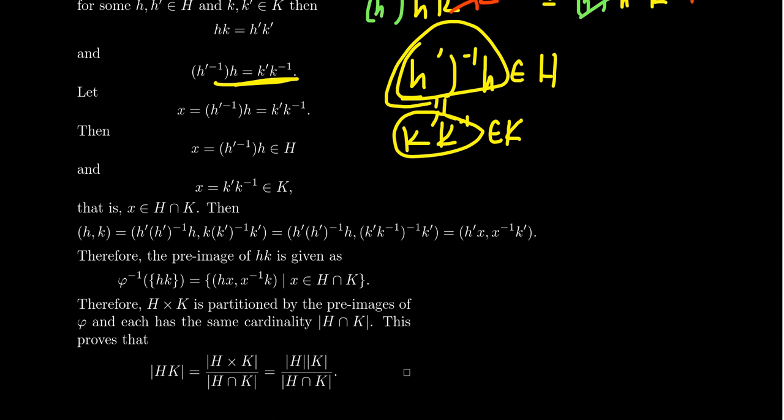Playing around with this product, hk, I can write this as h prime h prime inverse h, so I can just write h that way because this is just the identity. And then let's multiply it by an identity element on the right, k prime inverse k prime. So that's the same element. But then with a little bit of tweaking, notice by the Shusak principle that (k prime k inverse) inverse, if you were to distribute that around, you twist things around, you end up with k k prime inverse. So that's just equality still, but this right here is x, and this right here is x inverse. So notice that hk is equal to h prime x times x inverse k prime.